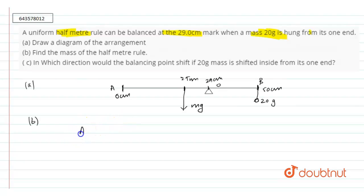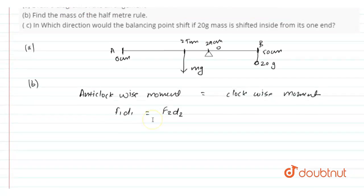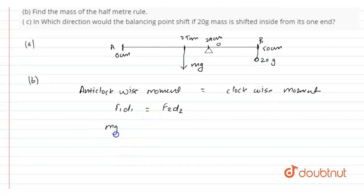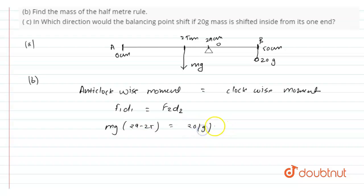Now we know that anticlockwise moment should be equal to clockwise moment which means f1 d1 is equal to f2 d2. Now, substituting the values we will get f1 is mg and d1 is 29 minus 25 and f2 is 20 into g and d2 is 50 minus 29.